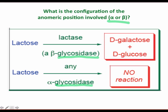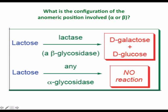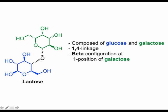Glycosidases cleave the glycosidic bond and add the elements of water to the disaccharide, yielding two monosaccharides. Only a beta glycosidase leads to the cleavage of lactose. This tells us that the anomeric carbon of galactose within lactose must have had the beta configuration. With this information in hand, we can fully specify the structure of lactose.